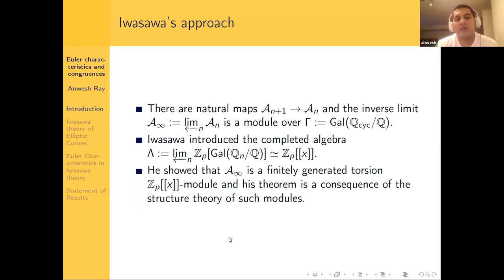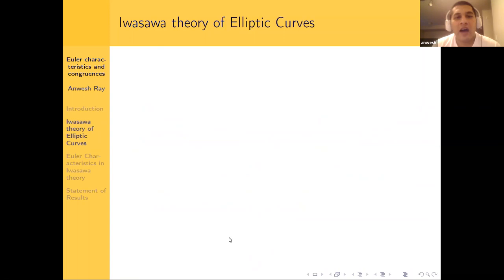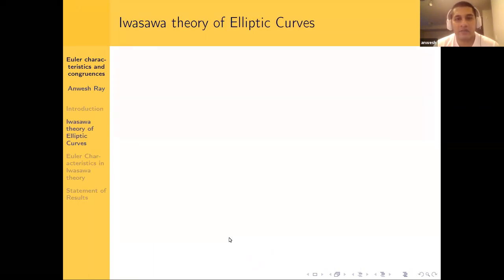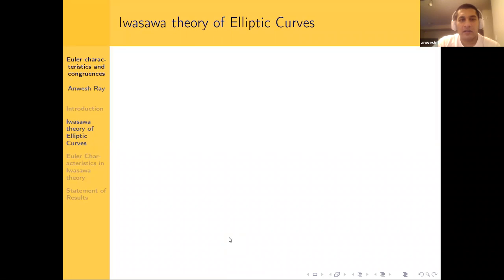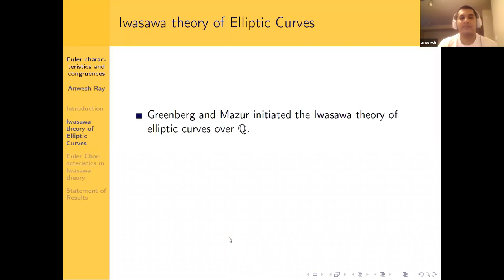These invariants that Iwasawa studied came about via the analysis of the structure theory of these modules over Z_P[[x]]. We should note that the isomorphism with Z_P[[x]] is non-canonical; however, there is an isomorphism and the invariants will be well-defined and not depend on the isomorphism. I want to jump ahead a little and introduce the Iwasawa theory of elliptic curves, which is really analogous to the theory of class groups in Z_P towers.